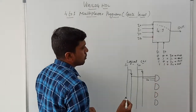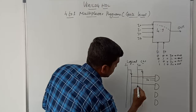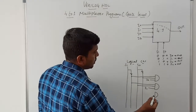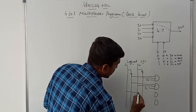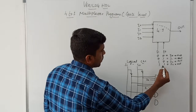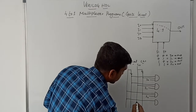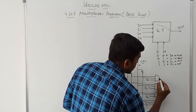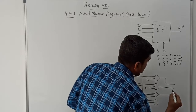For the second AND gate, we apply the second possibility of selection line input: S1=0, S0=1, and the third input is I1. For the third AND gate, the selection inputs are S1=1, S0=0, and the third input is I2. For the final AND gate, both values are high: S1=1, S0=1, and the third input is I3. After that, you get the output from each AND gate, and these 4 outputs connect to 1 OR gate.